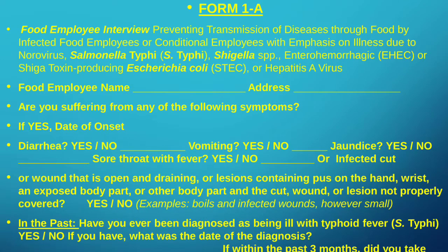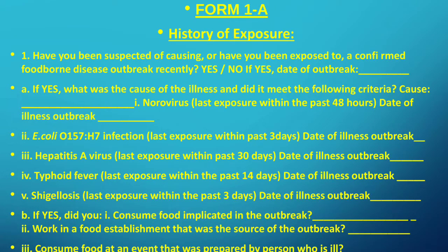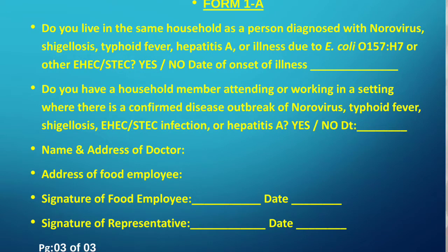The food facility should maintain a track record of each individual working inside. A health court system should be implemented and employees should be examined at every opportunity. There should also be a health questionnaire to determine whether individuals have or had any contagious diseases, whether family members are healthy, and whether anyone has been infected with typhoid, Salmonella, or other communicable diseases.